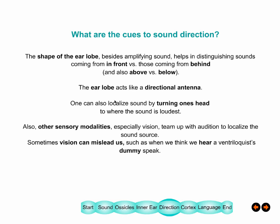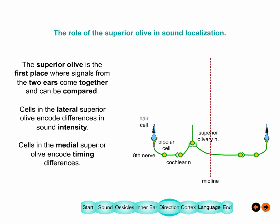Vision is really important for telling us what a sound is, and the visual system can sometimes capture the sound source. A ventriloquist moves a dummy's mouth while speaking from elsewhere, and you think the dummy is the sound source. When watching a movie, you see a mouth move and get the impression that's where the sound is coming from.